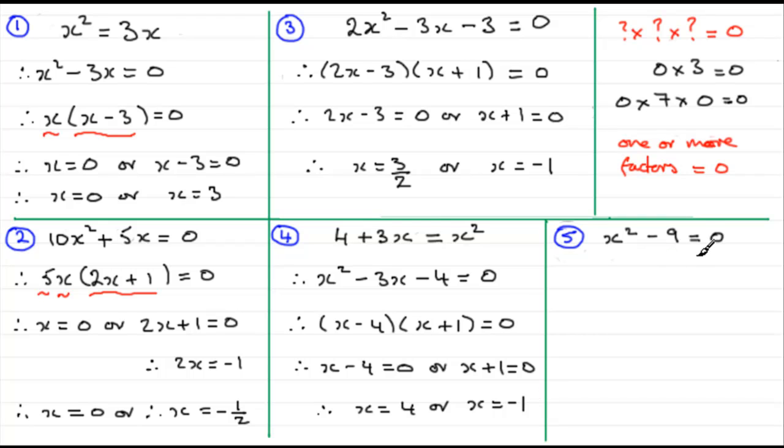And for this last one, it's very tempting to go x² = 9. And you can do that if you know what you're doing. x² = 9. Take the square root of 9. What do you get? Well, you quite often get people writing just simply 3. But don't forget, it is plus or minus 3 if you go down that route. x² = 9, x = square root of 9, plus or minus 3.